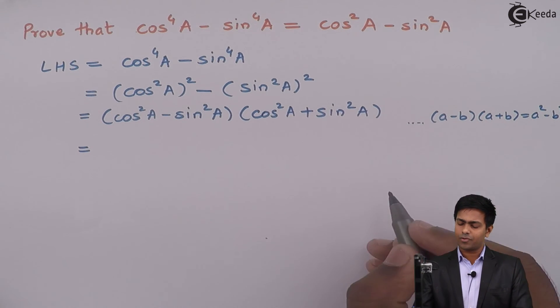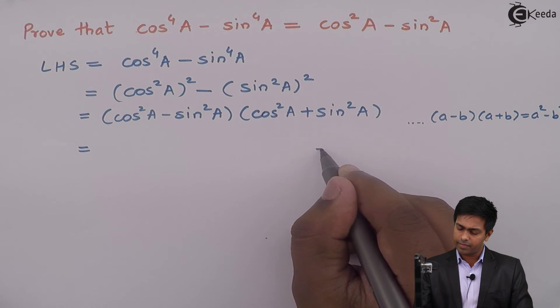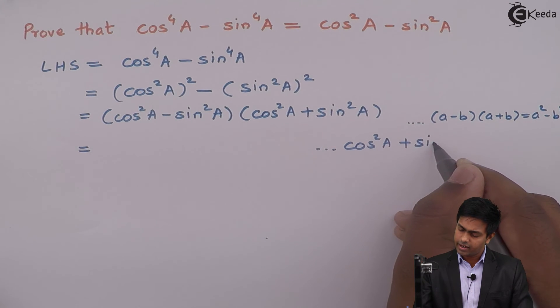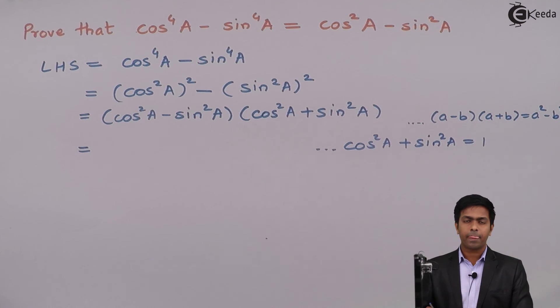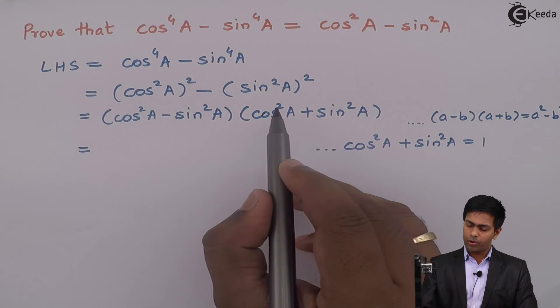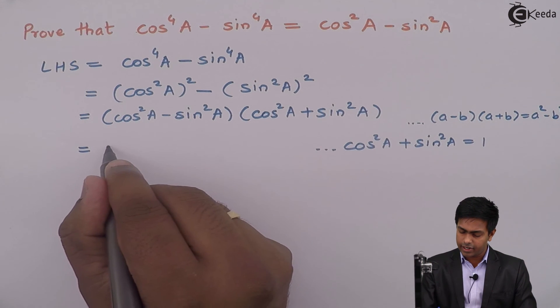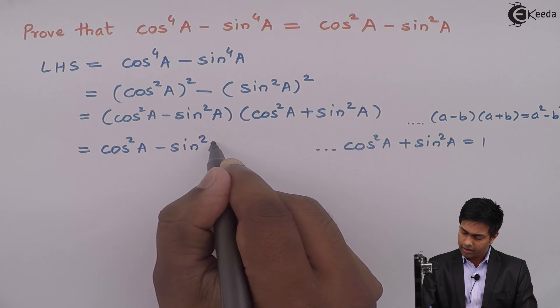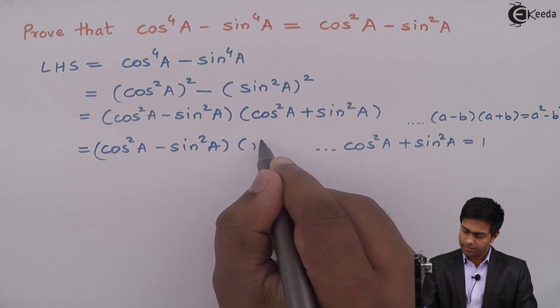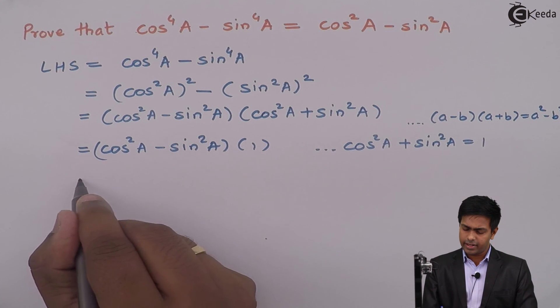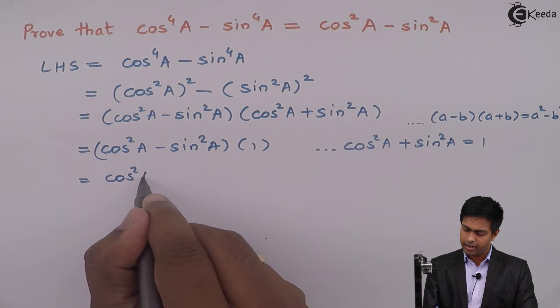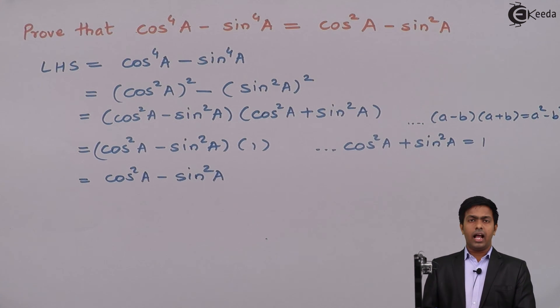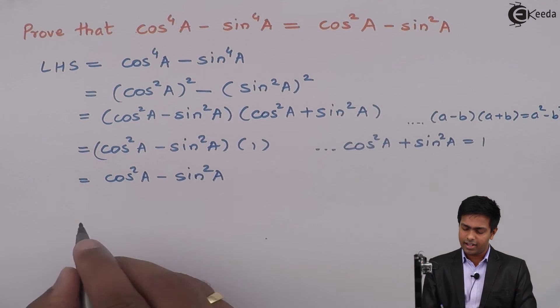We know the formula for cos square A plus sin square A. So the formula of cos square A plus sin square A is 1. So therefore, I will put here 1 and we will get cos square A minus sin square A into 1. And 1 into anything is anything, that is cos square A minus sin square A. And if you will observe, then we got our right hand side.